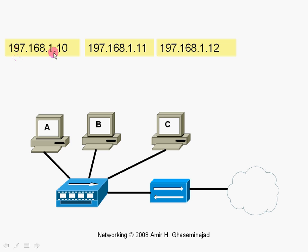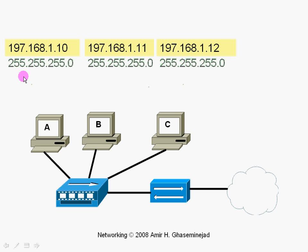You may look at the IP address and say 197 is a Class C address, and obviously the destination is also in Class C. But computers don't look at things that way — they need a more decisive way of determining if the destination is in the local network or not. And we teach them by assigning something called the subnet mask.